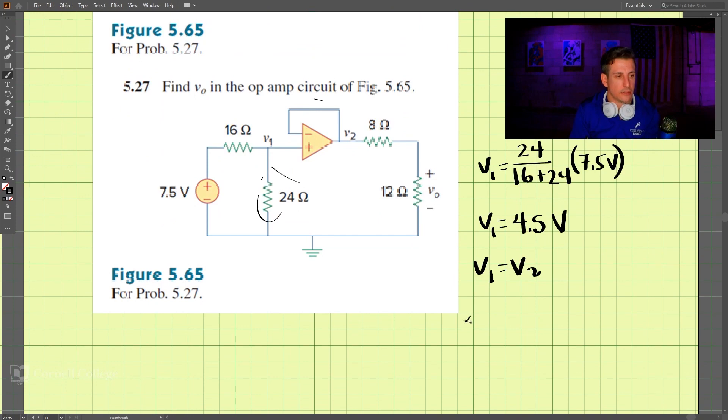And lastly, to figure out v0, v0 is equal to this resistor 12, voltage divider again, divided by 12 plus 8, times our v2 which is equal to v1 which is 4.5.